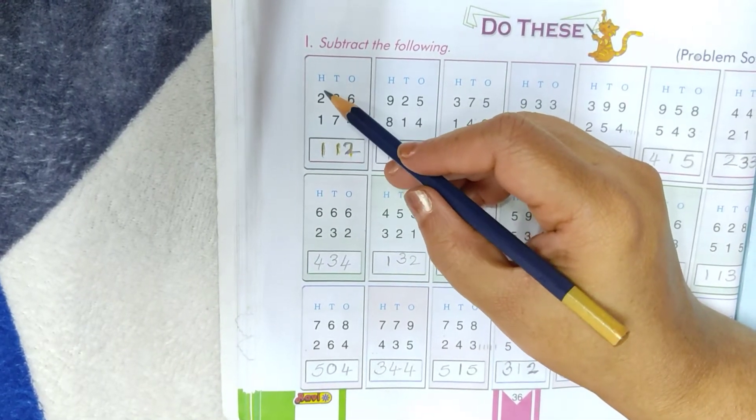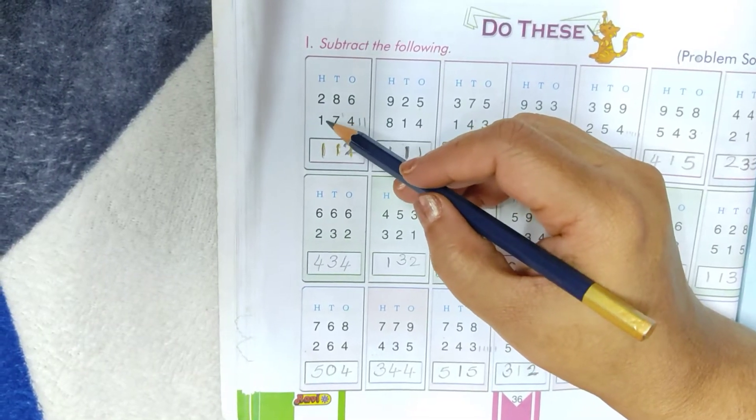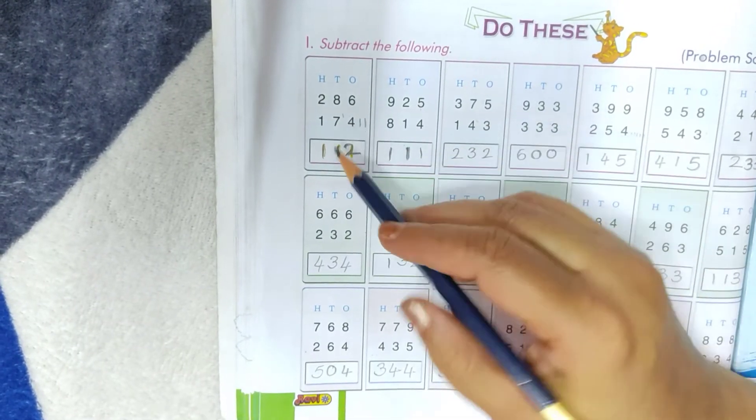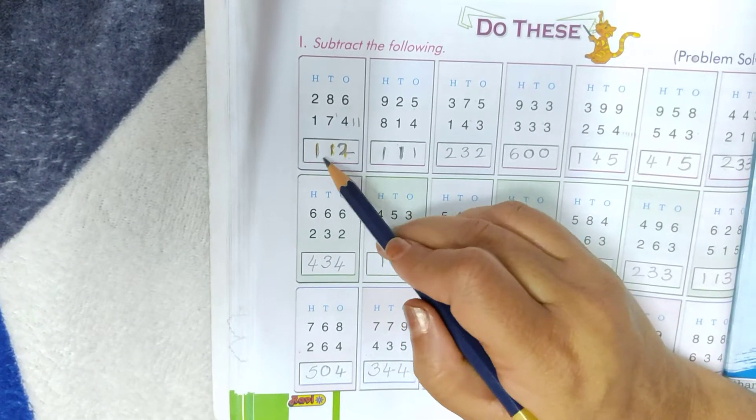Then subtract numbers which are in 100's place. After 1, 2. 112 is the answer. 1, 1, 2.